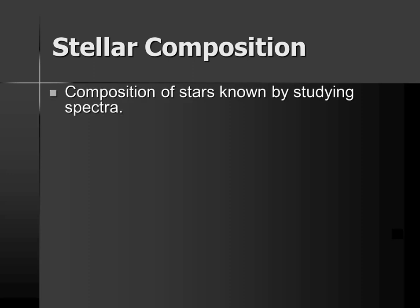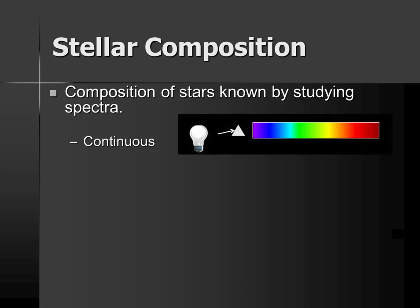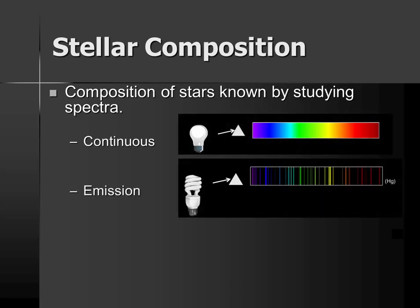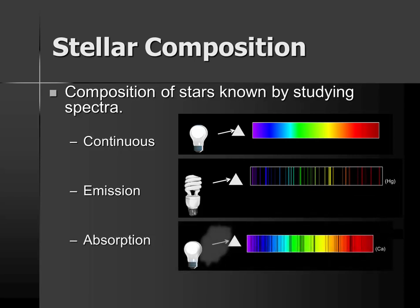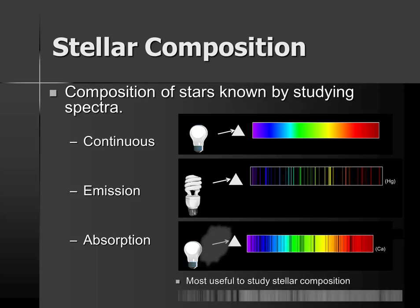Star composition: we've never been able to sample a star, but we do know something about stellar composition by analyzing starlight. We do this by studying the spectrum of stars. There's the continuous spectrum, the emission spectrum, and the absorption spectrum. The absorption spectrum is the most useful one for studying stars, as it allows us to study the chemicals of gas in stellar atmospheres. Here in the lowermost black and white image, we can see the spectrum of a typical sun-like star.